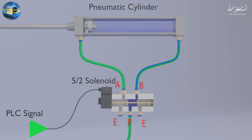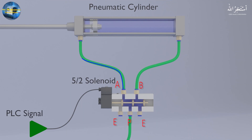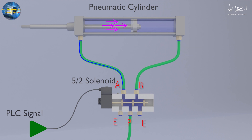When the PLC signal is turned off, it de-energizes the coil of the solenoid valve. Its spool moves and links the pressure port with port A of the solenoid valve, and port B with the exhaust port. This way, compressed air moves toward port A, and through the pipe it enters the front port of the cylinder. As the compressed air now exerts pneumatic pressure on the front side of the piston, it starts to move in the backward direction.